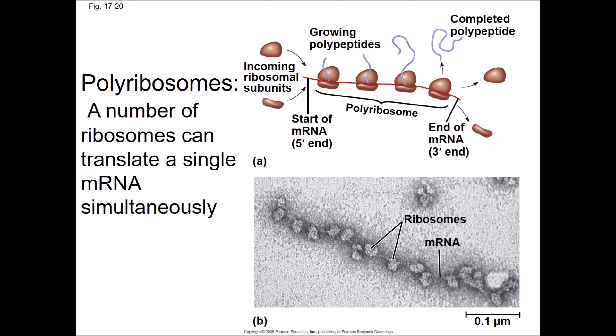A single molecule of mRNA can be read many, many times by ribosomes. A highly active mRNA can be read by multiple ribosomes at the same time; this is called a polyribosome. Each ribosome in a polyribosome makes a single polypeptide chain.